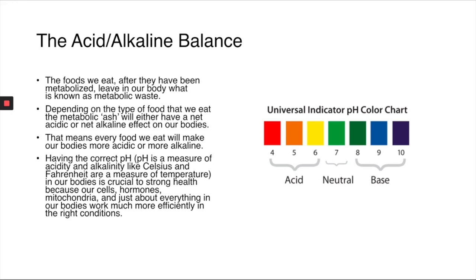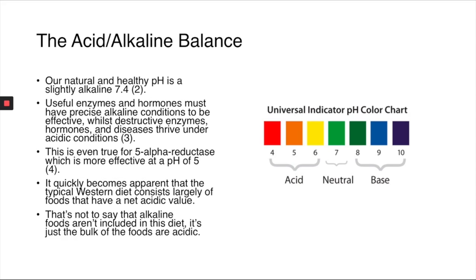The foods we eat, after being metabolized, leave metabolic waste within our body. Depending on the type of food, the metabolic ash will have a net acidic or net alkaline effect, making our bodies more acidic or more alkaline. It's very important to have the correct pH because our cells, hormones, and mitochondria need the right conditions to work effectively. Our natural healthy pH is a slight alkaline at 7.4. Useful enzymes and hormones must have precise alkaline conditions to be effective, while destructive enzymes, hormones, and diseases thrive in acidic conditions. This is also true for 5-alpha reductase, which is most effective at a pH of 5 — acidic. The typical western diet consists largely of foods with a net acidic value.